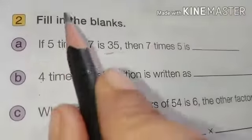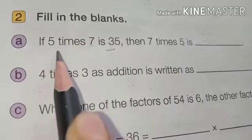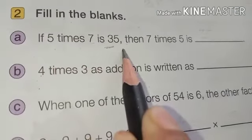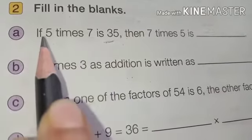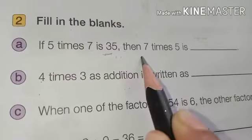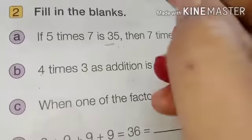In the next, we can fill in the blanks. If 5 times 7 is 35, means 7 how many times is there? 5 times is 35. Then 7 times 5, now we can write here.